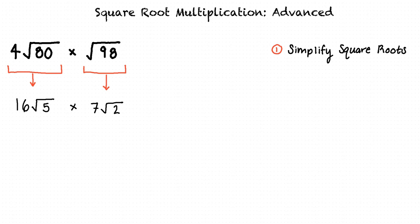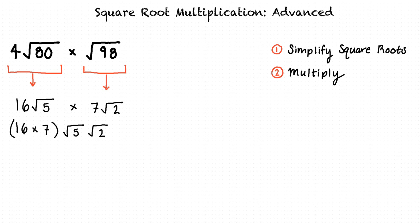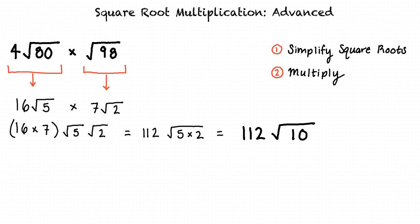Next, we multiply these two expressions together. 16 times the square root of 5 times 7 times the square root of 2 is equivalent to 16 times 7 times the square root of 5 times the square root of 2. This equals 112 times the square root of 5 times 2, which results in 112 times the square root of 10.